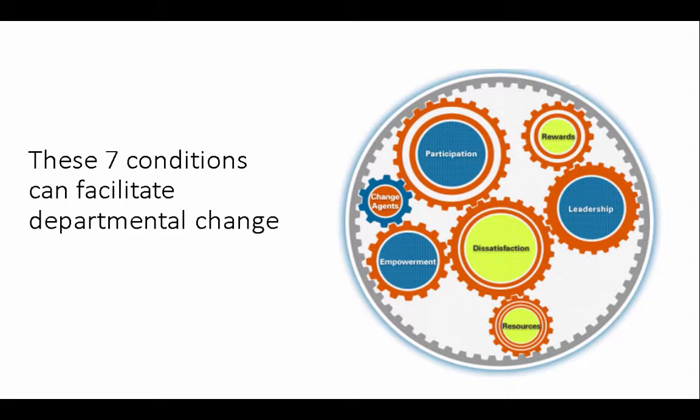Participation. Broad engagement across your department reduces resistance to change. When people engage in planning and implementing change, they feel ownership and then they're less likely to impede change efforts. Leadership. Visible, high-level, and external endorsement and support helps to ensure that you make progress towards your goals. And then the smallest cog on here, but certainly not the least important, is the change agent. This is probably you. If it's not, then you should identify a champion to guide the change effort.